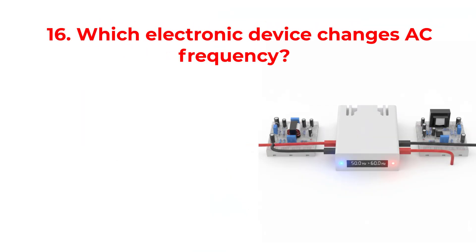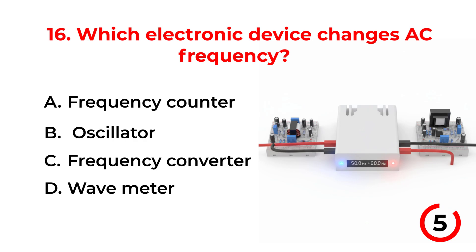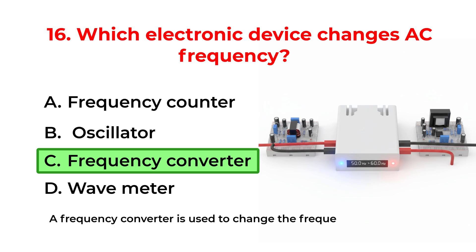Which electronic device changes AC frequency? A. Frequency counter. B. Oscillator. C. Frequency converter. D. Wave meter. The correct answer is Option C: Frequency converter. A frequency converter is used to change the frequency of AC power according to needs.